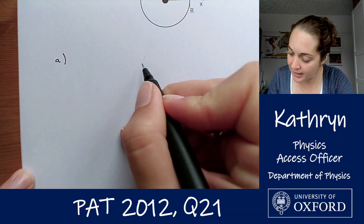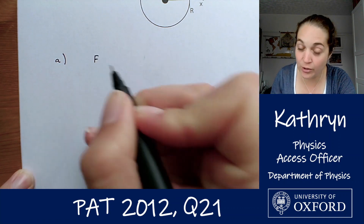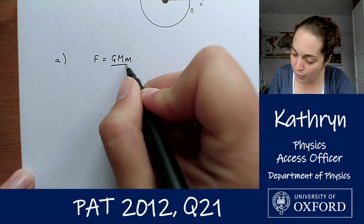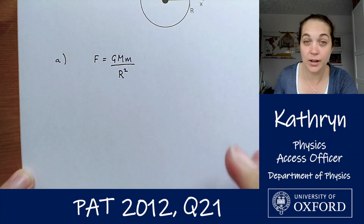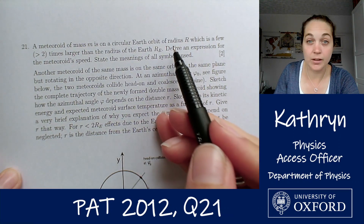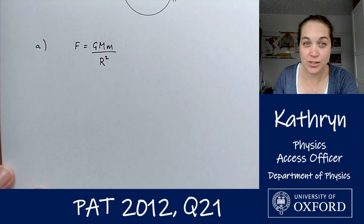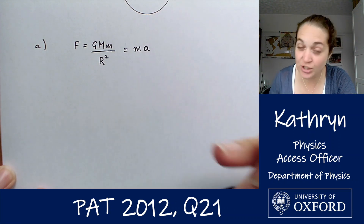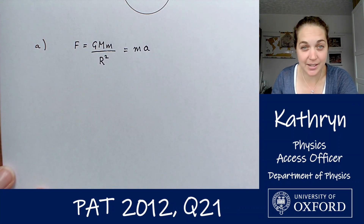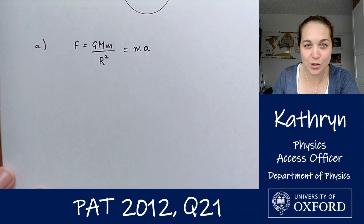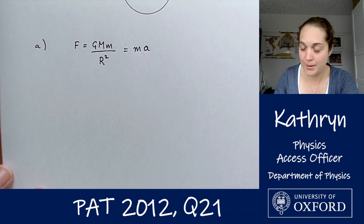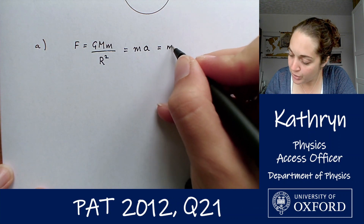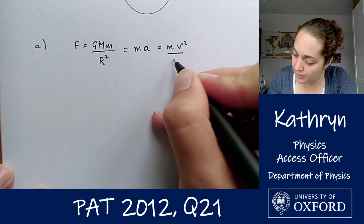So we've got our meteoroid. The force on the meteoroid is going to be the force due to gravity, given by GMm/r², where r is the radius of the orbit. We know Newton's second law, F = ma, so that equals m times the acceleration. The acceleration here is the centripetal acceleration — the acceleration of the orbiting body towards the centre of the Earth — given by a = v²/r. So our expression becomes mv²/r.